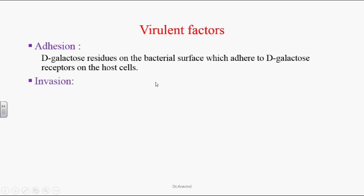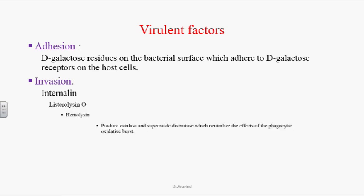Invasion: Listeria organisms have internalin molecules, and these internalin molecules stimulate the host cells to undergo endocytosis. After entering inside the endocytotic vesicles, they secrete Listeriolysin O, which acts as a hemolysin.